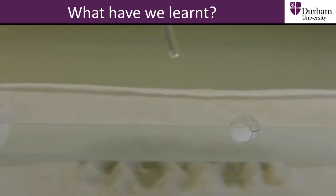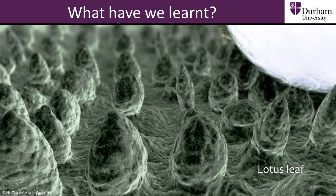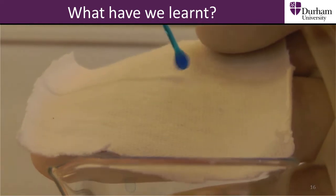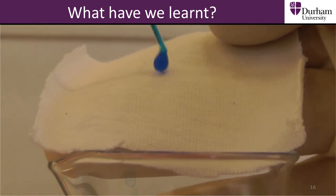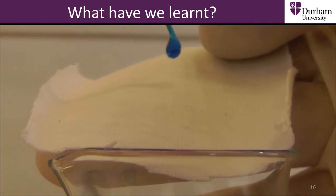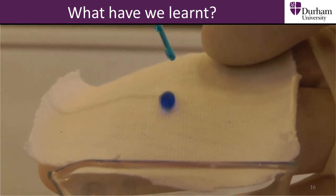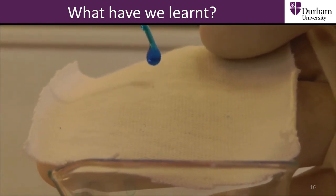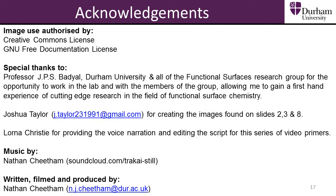In this video we have learnt about super repellent, or super hydrophobic, surfaces. These surfaces are special because they don't allow water to spread or stick on them. The surfaces can do this because of their very rough texture, like the pillars of the lotus leaf. We can use technology to make our own super hydrophobic surfaces with many different uses, like waterproof clothing or avoiding spills.